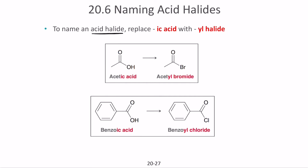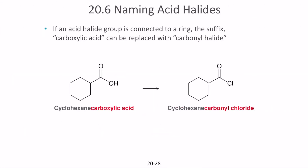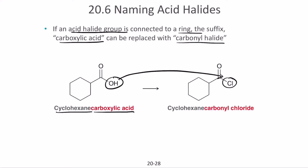To name an acid halide, we replace the '-ic' suffix with '-yl halide.' For example, acetic acid with bromine becomes acetyl bromide; benzoic acid with chlorine becomes benzoyl chloride — 'benzoyl chloride' is the systematic name but the common name can also be used. If an acid halide group is connected to a ring, we replace the carboxylic acid portion with 'carbonyl halide.' For example, cyclohexane carboxylic acid with chlorine replacing OH becomes cyclohexane carbonyl chloride.